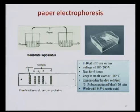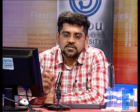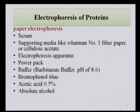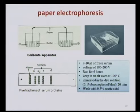After separation, the protein fractions appear as bands on the paper. The fractions of serum proteins are albumin and globulins — alpha-1, alpha-2, beta, and gamma globulin. The serum, which appears as a colorless transparent solution, when subjected to electrophoresis produces different bands identified through paper electrophoresis. Various conditions include 7 to 10 microliters of fresh serum, a voltage of 180 to 200 volts, and the procedure is carried out for six hours.